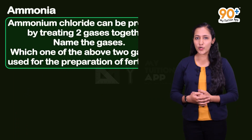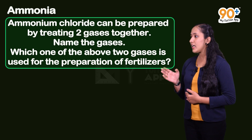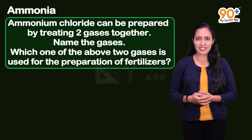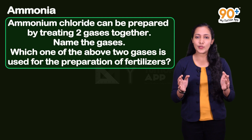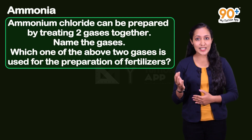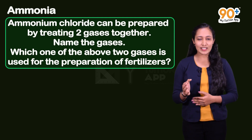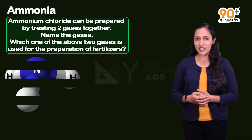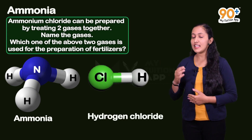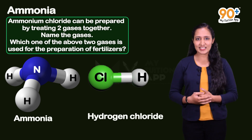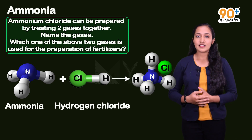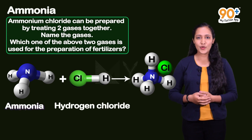Moving on to the second question. Ammonium chloride can be prepared by treating two gases together - name the gases. Which one of the above two gases is used for the preparation of fertilizers? The two gases are ammonia NH3 and hydrogen chloride HCl. When they react together, ammonium chloride is formed. It can be represented as NH3 + HCl → NH4Cl. Ammonia gas is used for fertilizers.